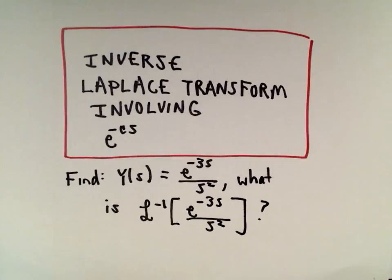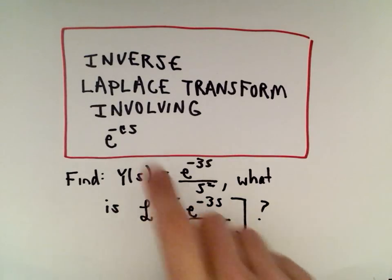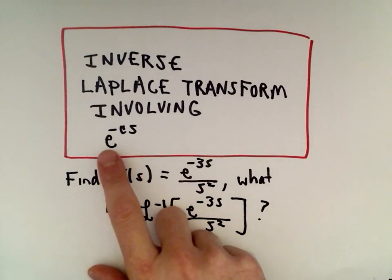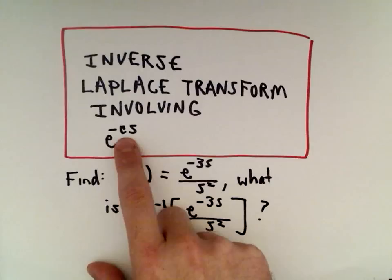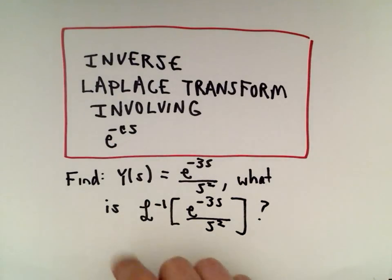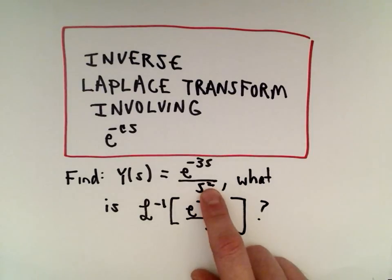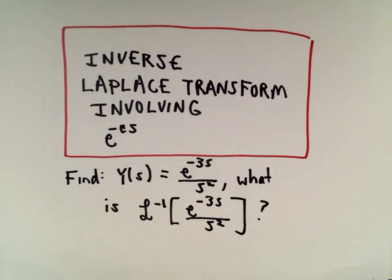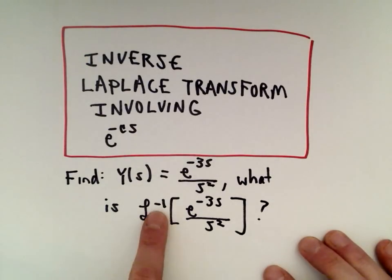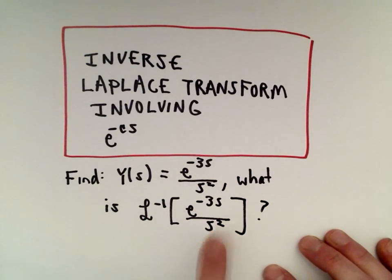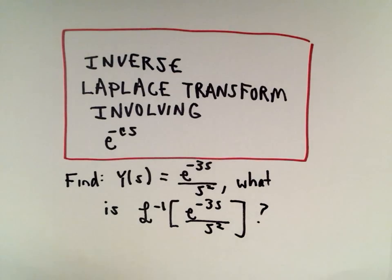In this video, I want to look at an example of finding the inverse Laplace transform of a function involving a factor of the form e to the negative cs. Here we're given Y(s) equals e to the negative 3s multiplied by 1 divided by s squared. Sorry, the little two kind of got squeezed in there. We want to compute the inverse Laplace transform of e to the negative 3s divided by s squared.